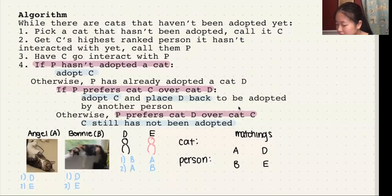I'm going to go through the algorithm by walking through an example at the same time. Here we have two cats, Angel and Bonnie, and their ranking preferences are here. We also have person D and E with their ranking preferences here.